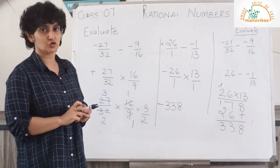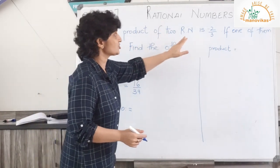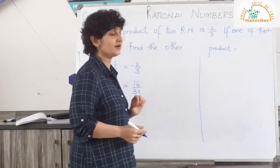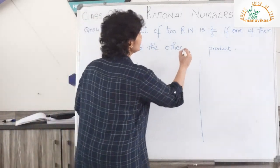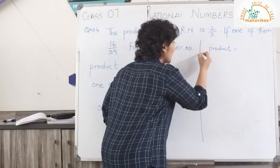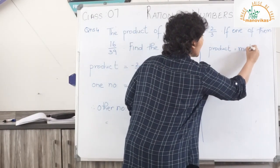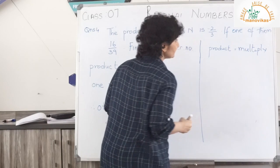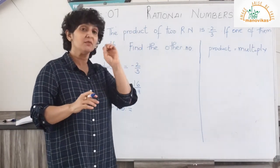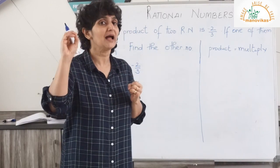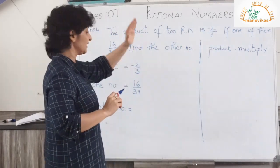We finish with that question. Our next question, question 4: the product of two rational numbers is minus 2 upon 3. If one of them is 16 upon 39, find the other number. Let's understand the meaning of product — product means the answer I get after multiplying. Remember: sum stands for add, difference is for minus, and product means multiply.